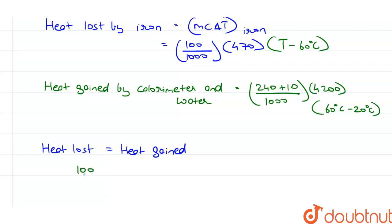Given as 100 upon 1000 times 470, which is the specific heat capacity of iron, into T minus 60 degrees Celsius.